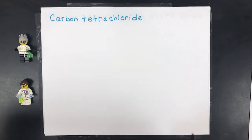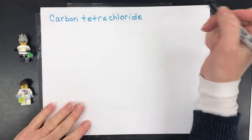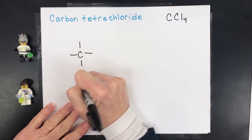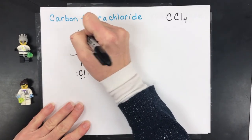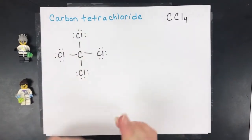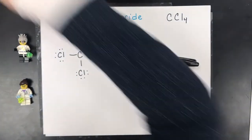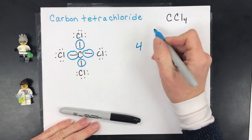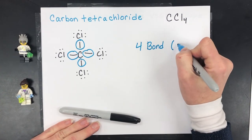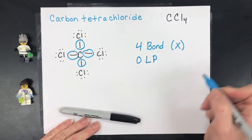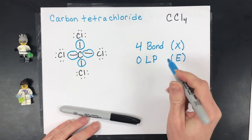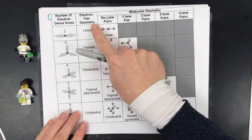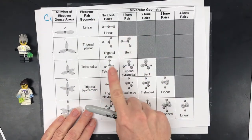I'm not going to explain why this is the dot structure — I have a separate video on Lewis dot structures. Carbon tetrachloride is CCl4; its dot structure has carbon in the middle bonded to four chlorines. The next step is to count the regions of electron density around the center atom. This molecule has four regions of electron density, all four bonded with zero lone pairs.